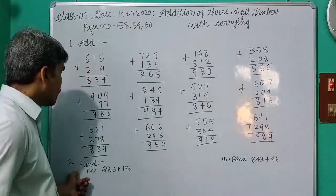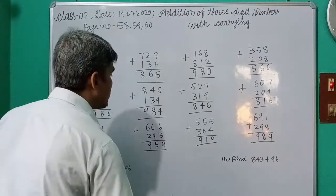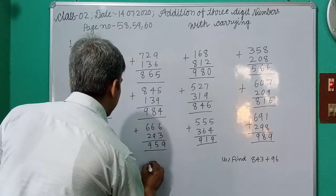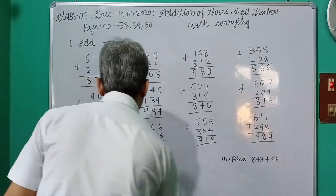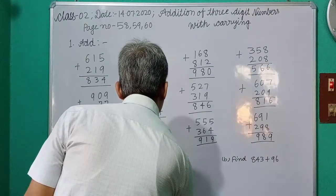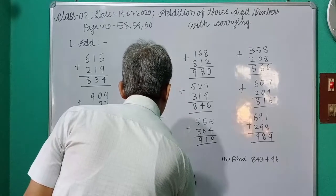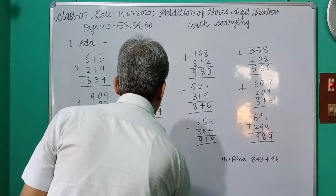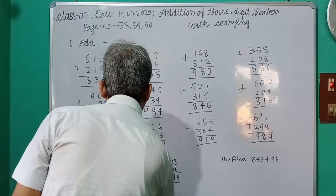Second question. Find 683 plus 196. At first, you write in the form of additions. 683 plus 196. 6 plus 3 equals 9. 9 plus 8 equals 17, write 7, carry 1. 6, 1, 7, 1, 8. Answer: 879.